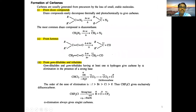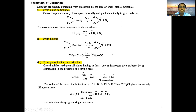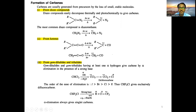Carbenes can be formed from diazo compounds, where nitrogen is released. They can also be obtained from ketenes — derivatives where the adjacent carbon is attached by a double bond — which can readily lose carbon monoxide to form carbenes. We can also get carbenes from gem dihalides, where two alkyl halide groups are present on the same carbon. If the halogen atoms are on adjacent carbons, that is a vicinal dihalide.